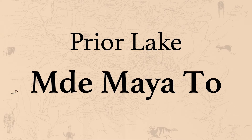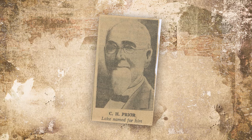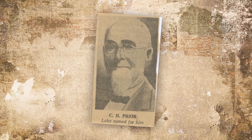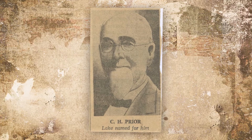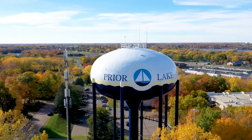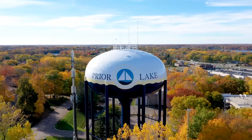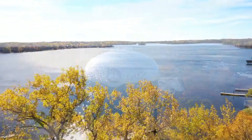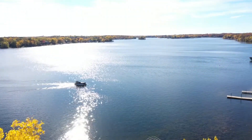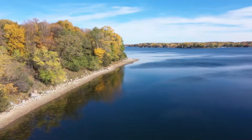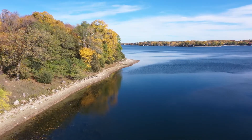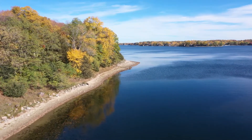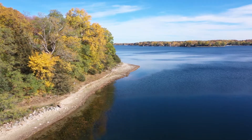Prior Lake. The Dakota name is Made Mayato. Prior Lake's English name derives from Charles Prior, given in honor of him from the time when he visited this area. Made Mayato is the name that the Dakota people reference for that body of water. Made means lake, Maya is a slope or a bank, and toe is blue or bluish. Together it's describing the bluish-green clay on the slopes of the lake.